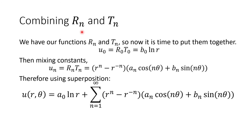Now that we have solutions for R_n and T_n, we multiply them together to find u. U_zero equals R_zero times T_zero - since T_zero is just a constant, it becomes b_zero times ln(r). For u_n equals R_n times T_n, I'll absorb the constant into a_n for the cosine term and b_n for the sine term. I'll also rename b_zero as a_zero for notational consistency with Fourier series. This gives us our full superposition solution.